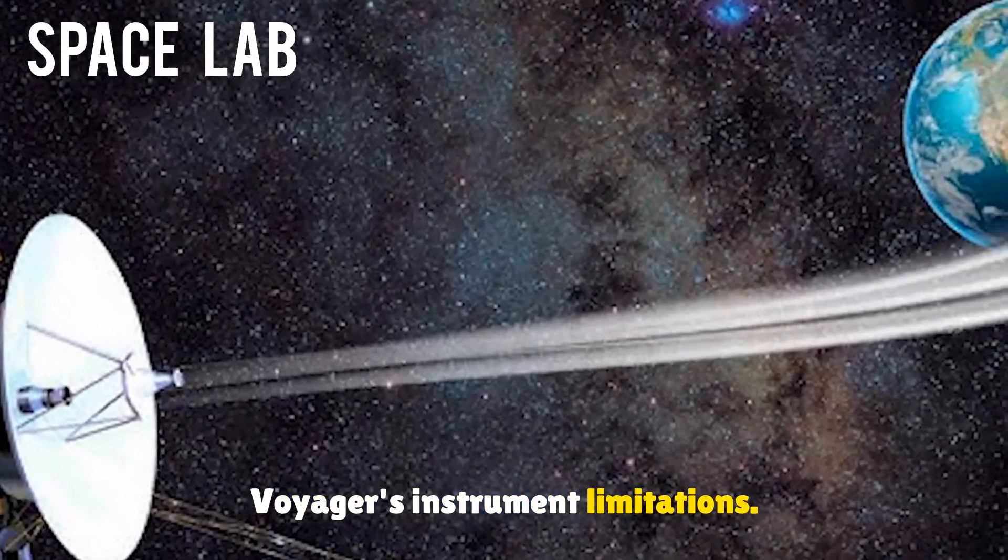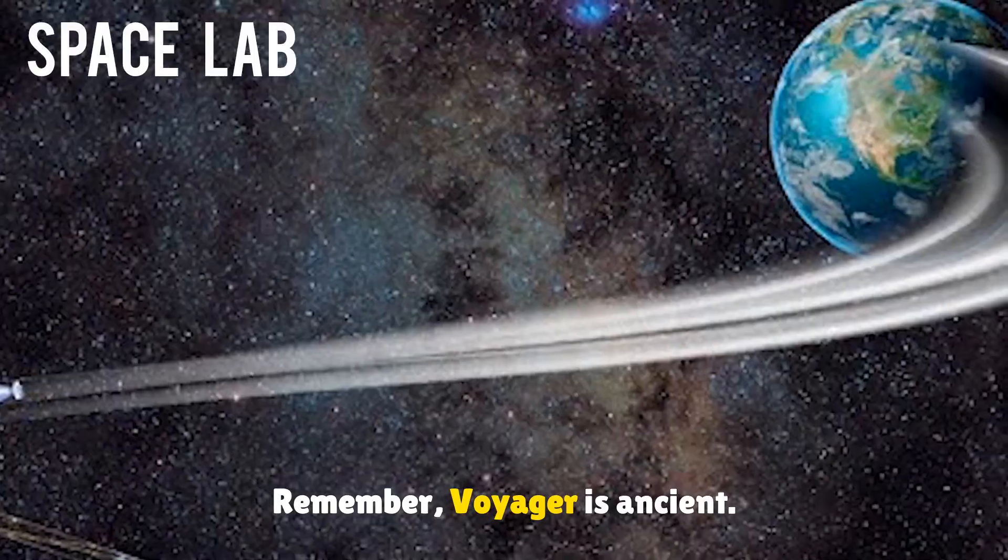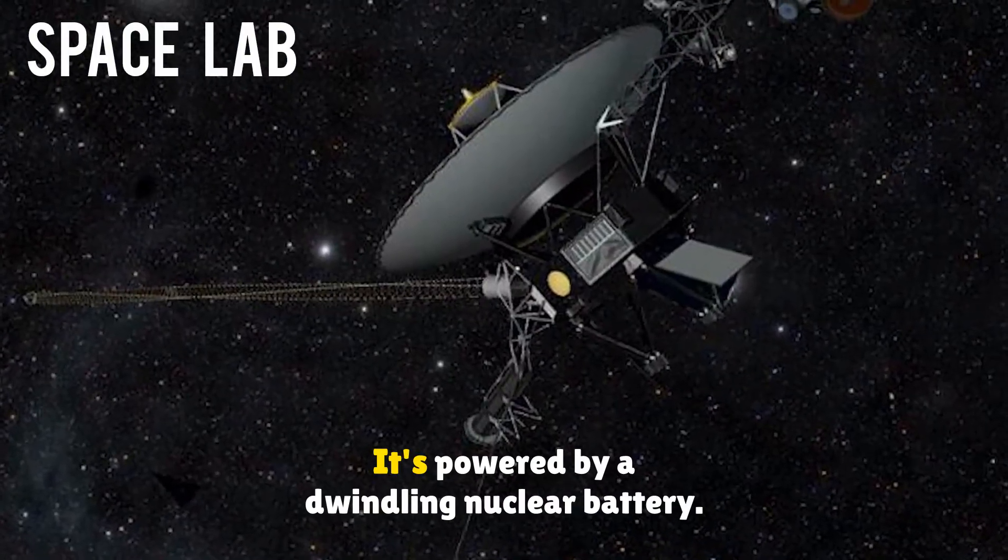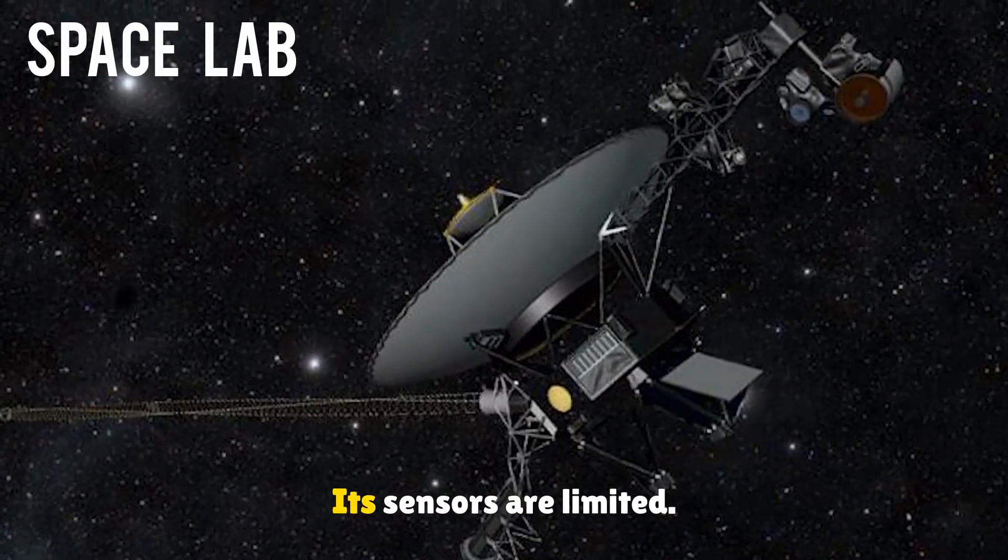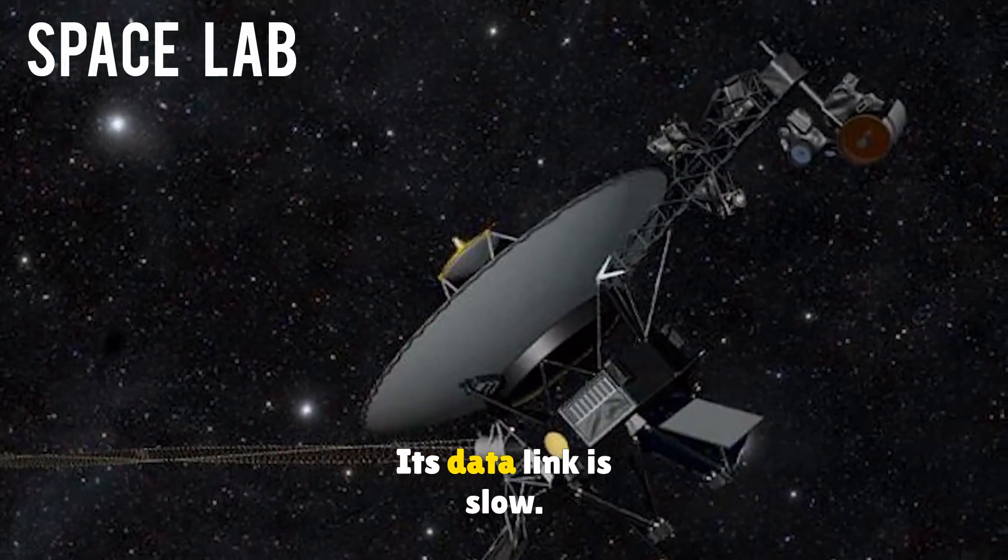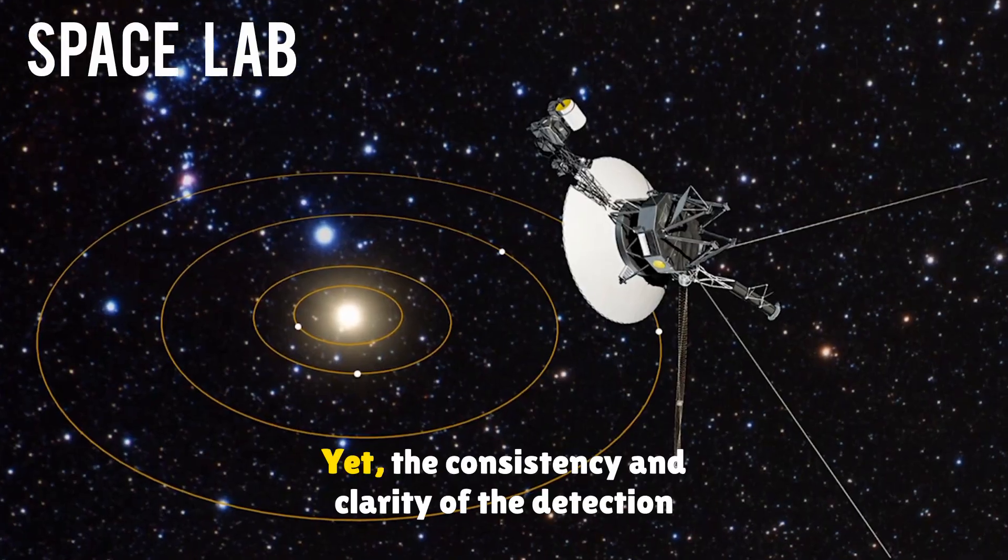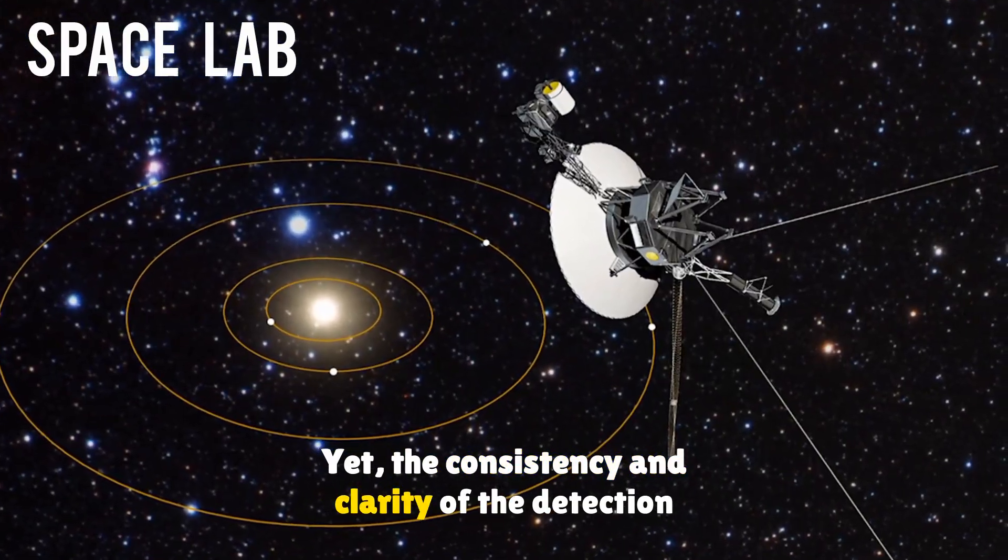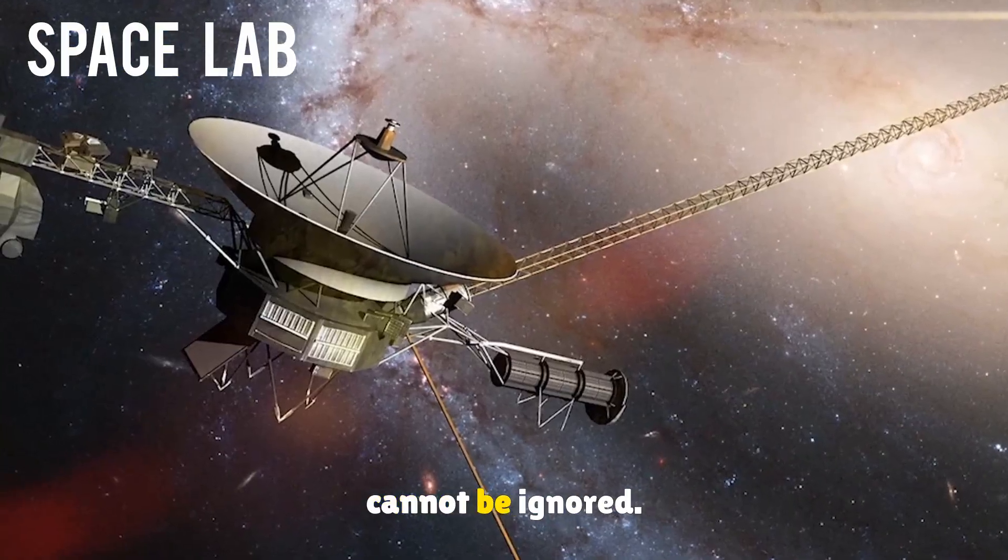Voyager's instrument limitations. Remember, Voyager is ancient. It's powered by a dwindling nuclear battery. Its sensors are limited. Its data link is slow. Yet, the consistency and clarity of the detection cannot be ignored.